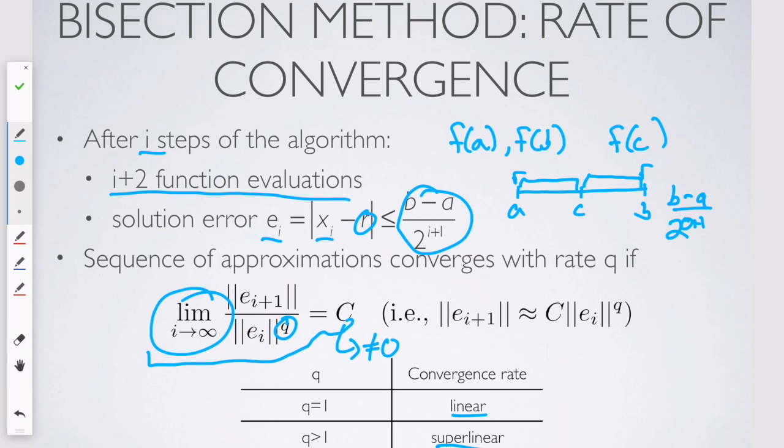Another way of rearranging this expression to think about convergence is it says that the i plus first error is just some constant times the i-th error raised to the q power.